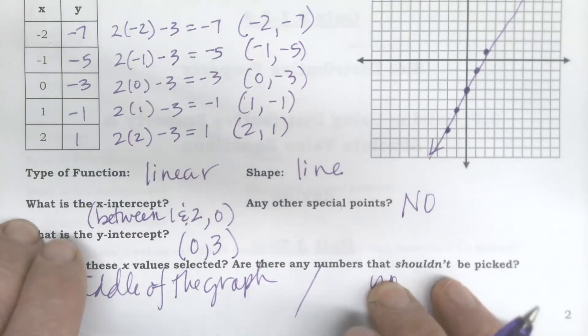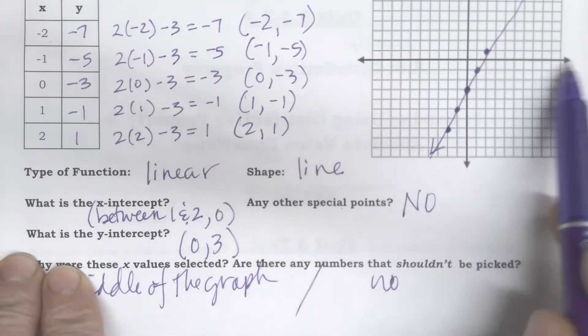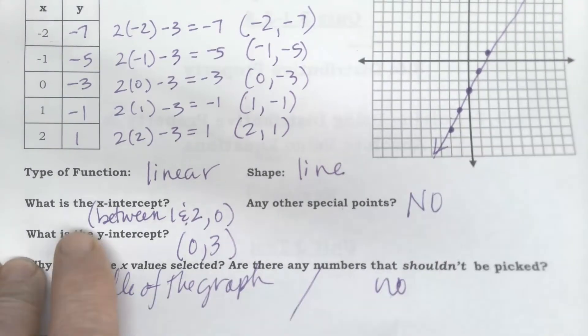No, I can pick anything I want. Some functions that's not the case, but in this function I can pick anything I want. There's no x that's out of the way. Now I probably wouldn't pick values like a hundred for x because that's off of my graph, so I'm not even going to be seeing it, but really I could if I wanted to.